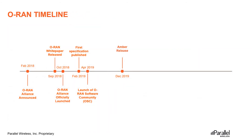The first OSC software code release, called Amber, was released in December 2019. It included initial contributions across 11 software projects. ORAN Alliance boasted that it contained more than 1 million lines of code with contributions from over 60 developers from more than 10 companies. It covered initial functionality of the near-real-time RIC, the OAN interface, and the protocol stack.